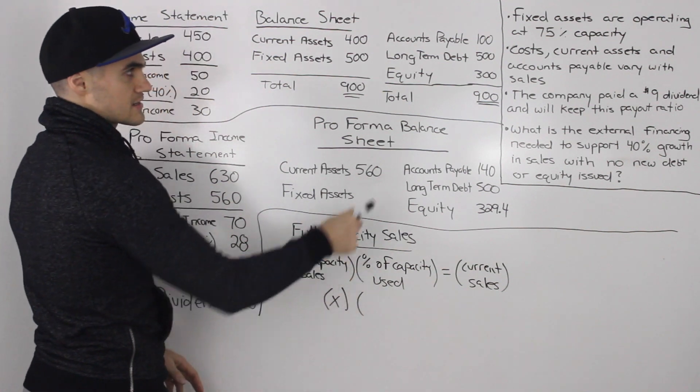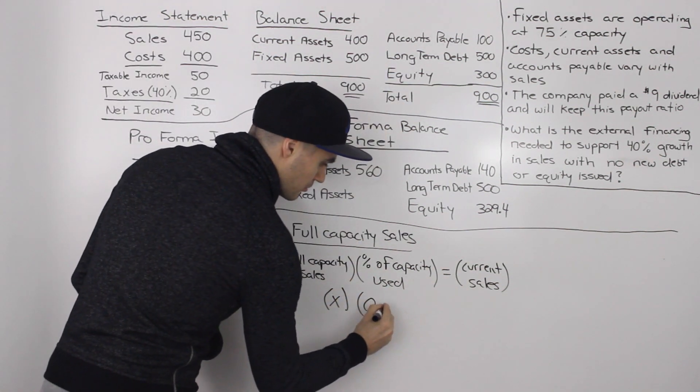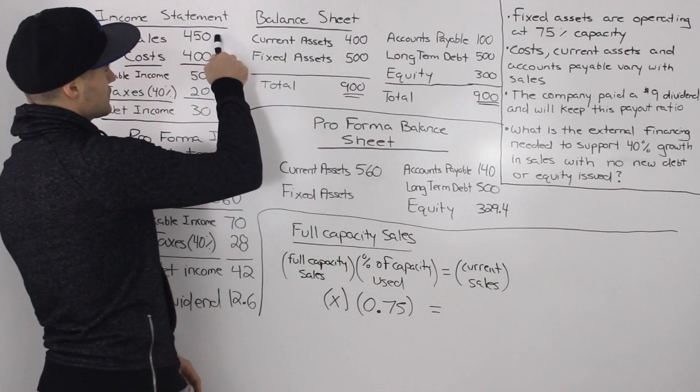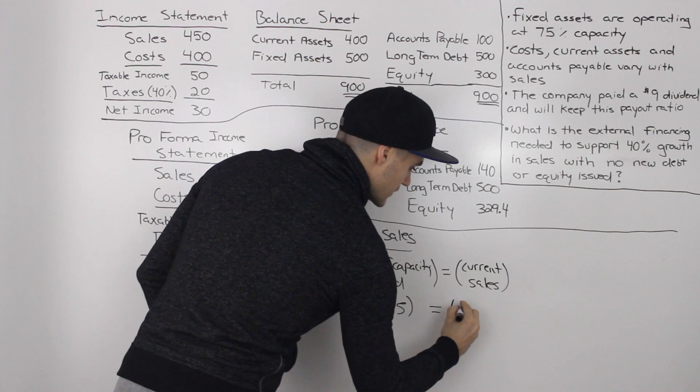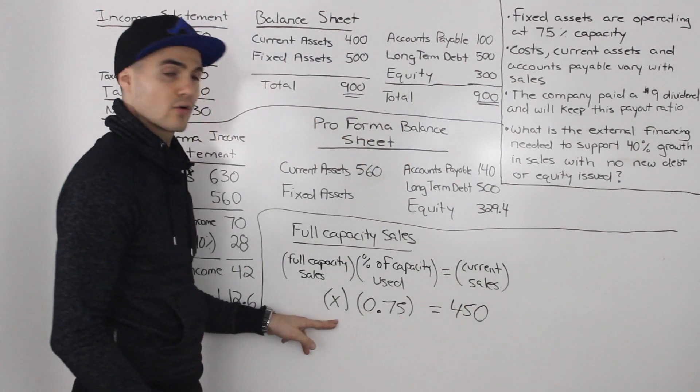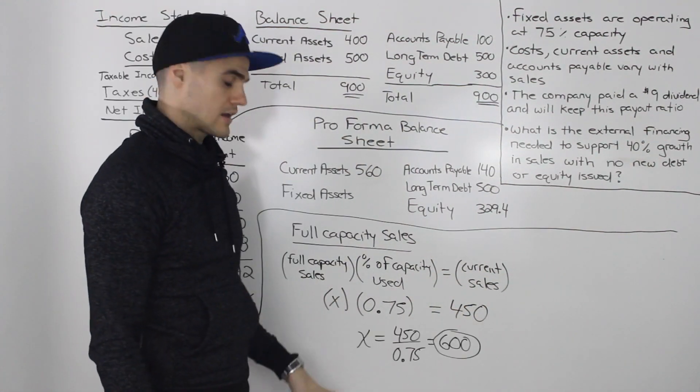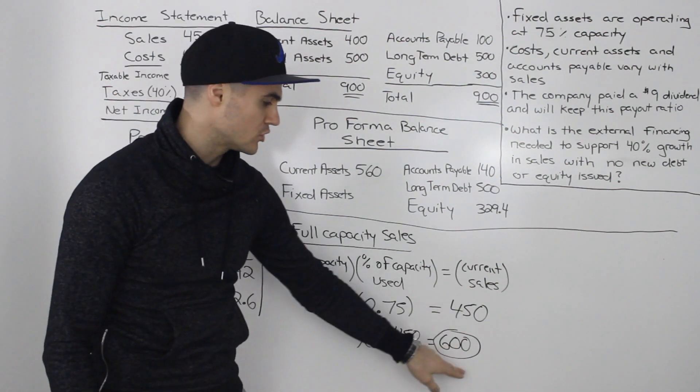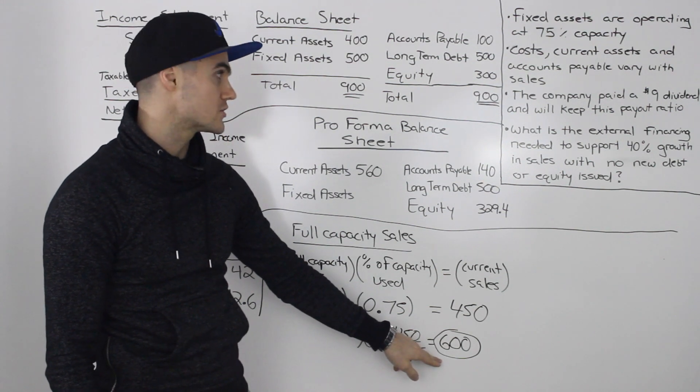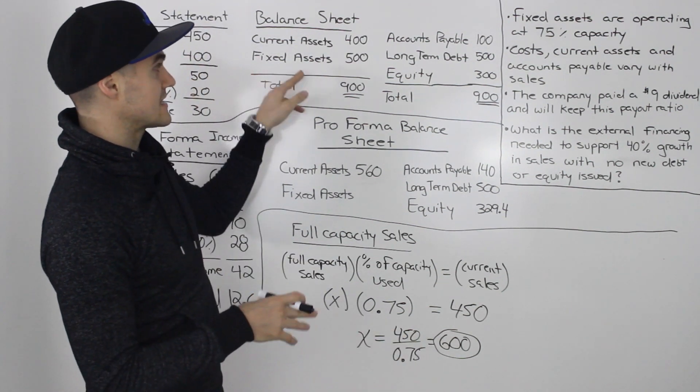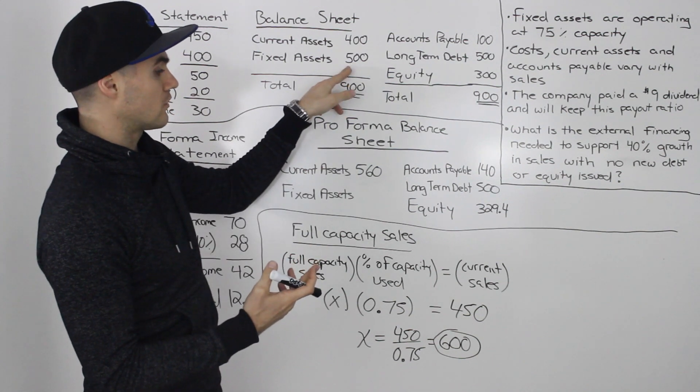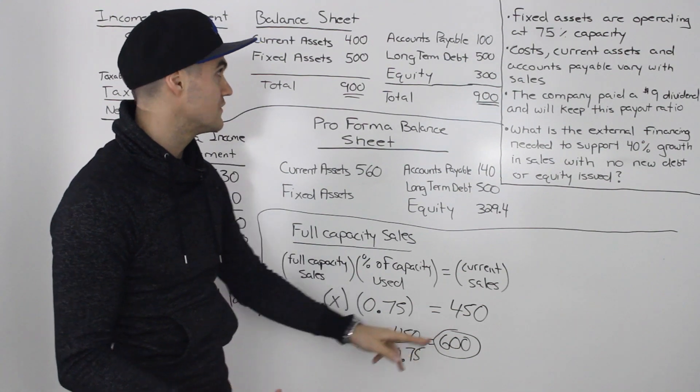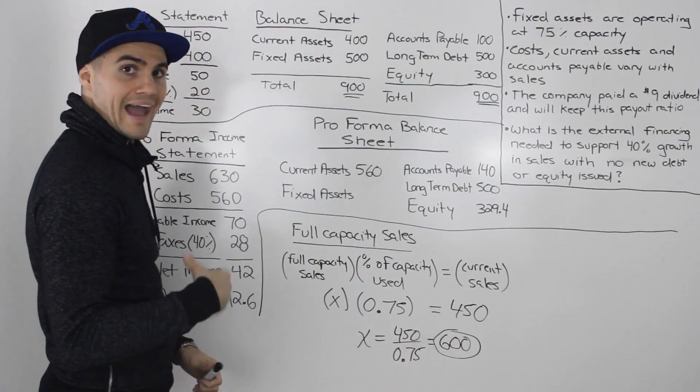Currently, the fixed assets are used at 75% of their capacity. So we would put 0.75 for this bracket. And they're currently producing sales for us of $450. So now we have to solve for that x variable. So then isolating for x, we would take the 450 divided by 0.75, and we would get full capacity sales of $600. So our fixed assets that we have currently of $500, they are capable of generating $600 worth of sales, even though they're only generating 450 at the moment.